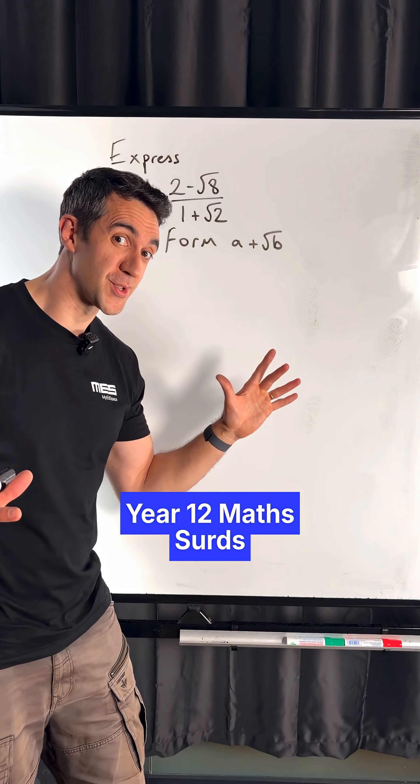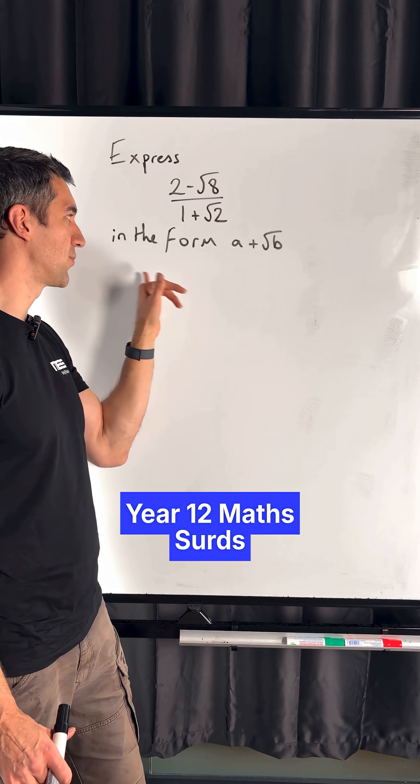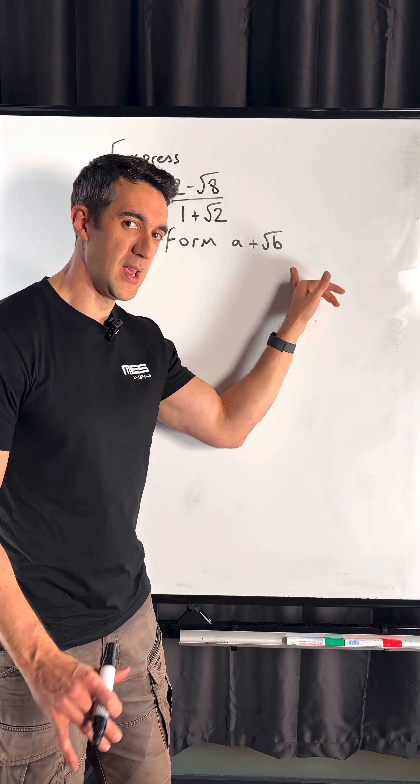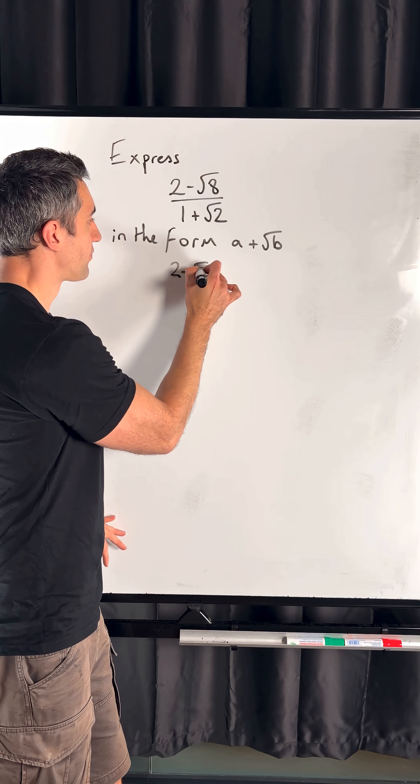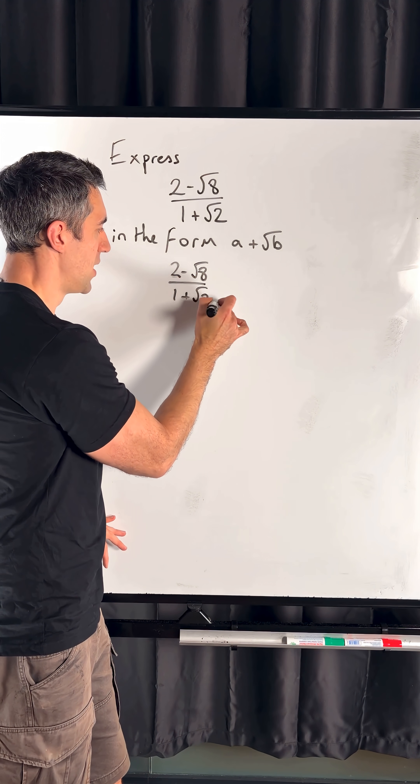So it looks like our normal surds question: express 2 minus root 8 over 1 plus root 2 in the form A plus root B. Off we go. So we take our 2 minus root 8 over 1 plus root 2. We're going to multiply, as we always do, by our conjugate of our denominator.